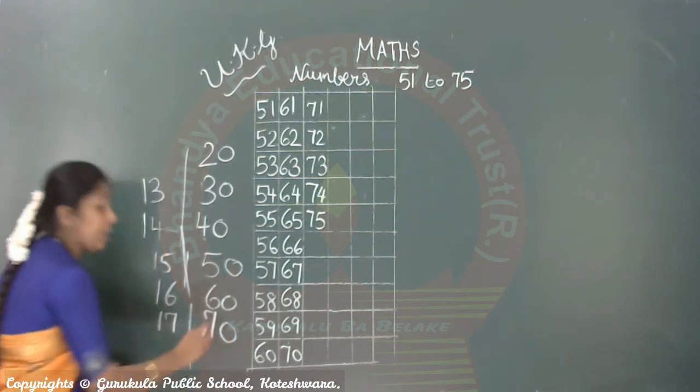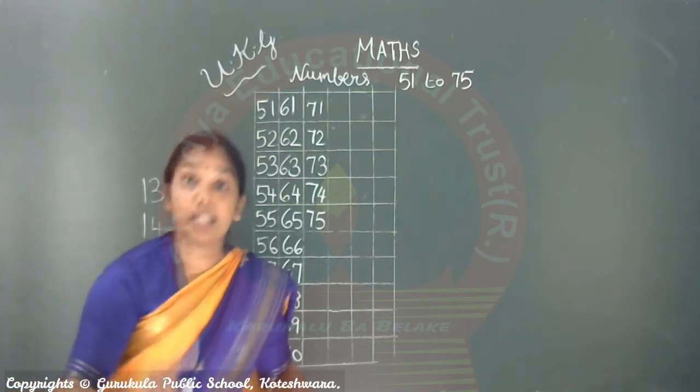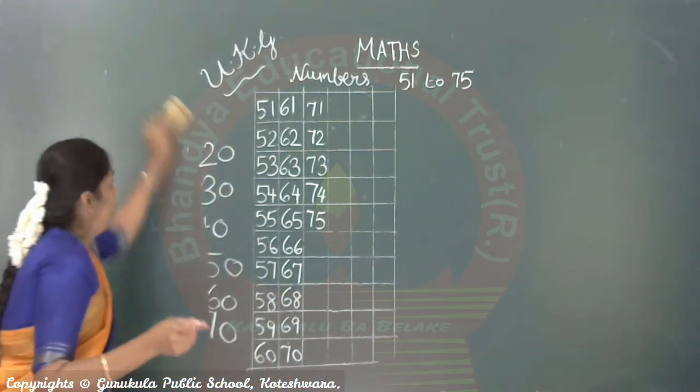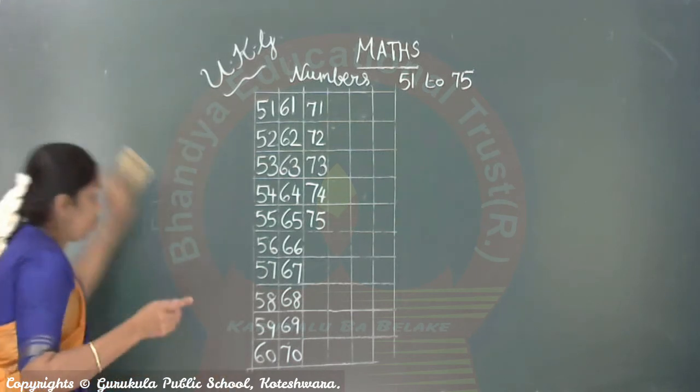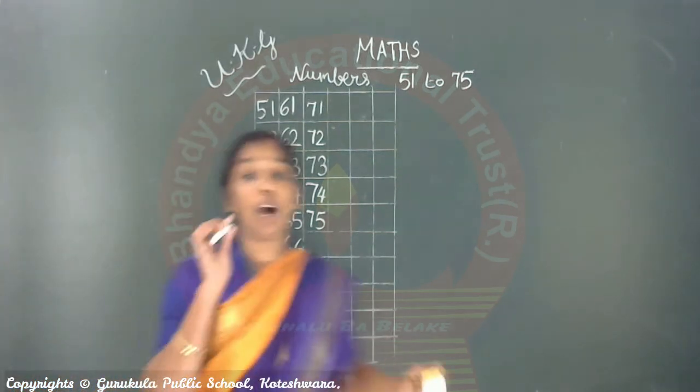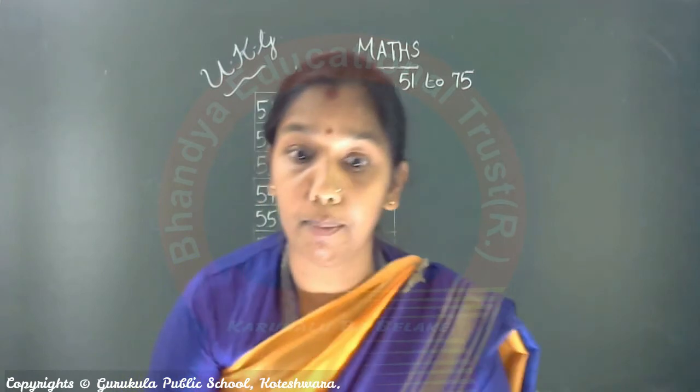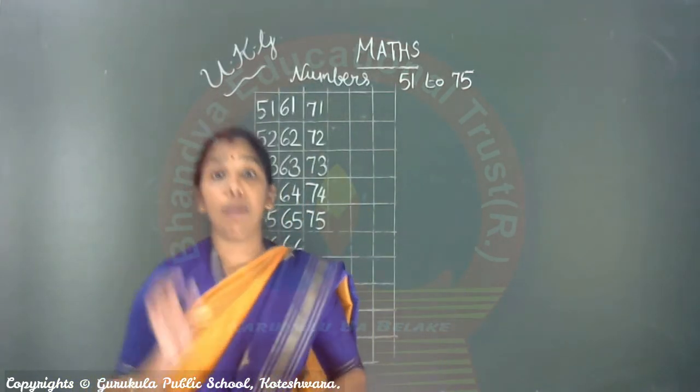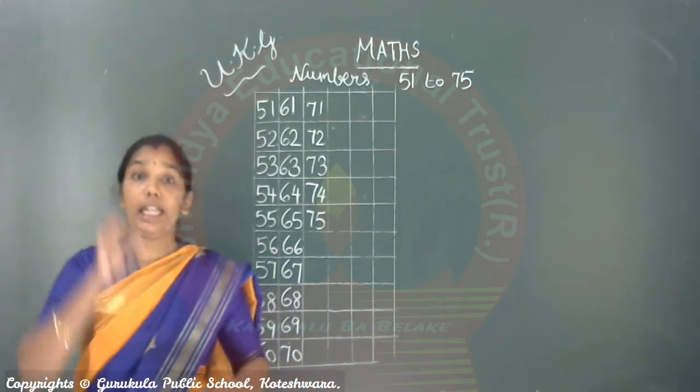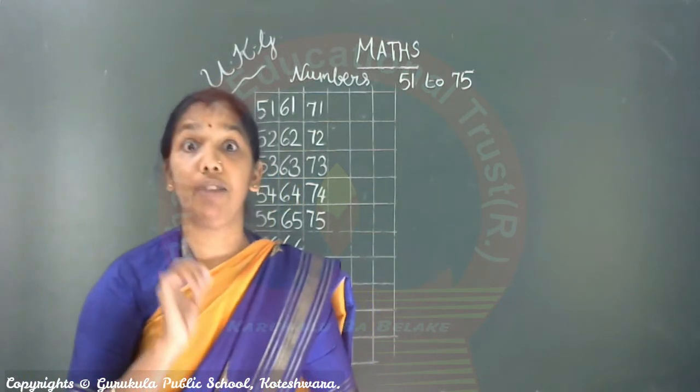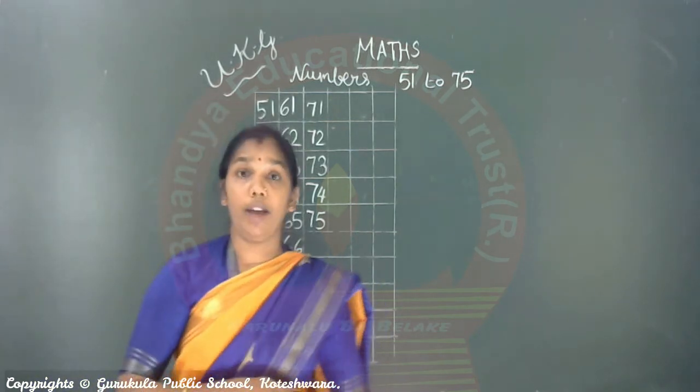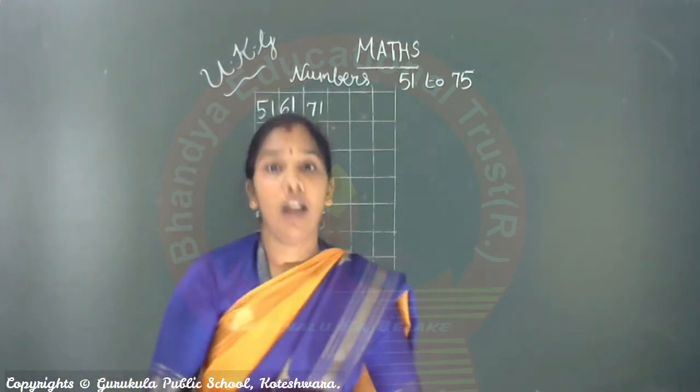This is 17 and this is 70. 70, right? Okay, so I hope you all understood now 51 to 75. How to write, how to pronounce the number. So you will all remember this and be careful by reading and by writing the numbers from 51 to 75, even the numbers 1 to 50 also. Okay, so thanks for now. Have a nice time. Bye.